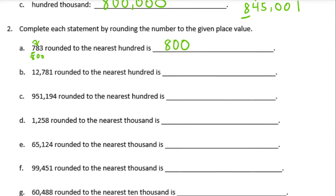Next: 12,781 rounded to the nearest hundred. The hundreds place here is a seven. Next to it is an eight. That eight is five or higher, so we round the seven up to an eight. The twelve stays the same, and everything behind the hundreds place turns into zeros. That becomes 12,800.